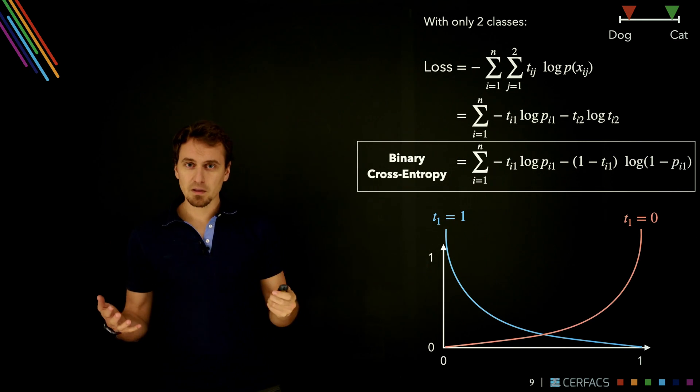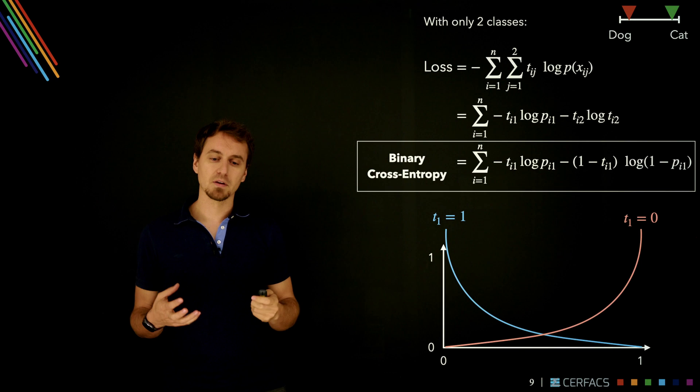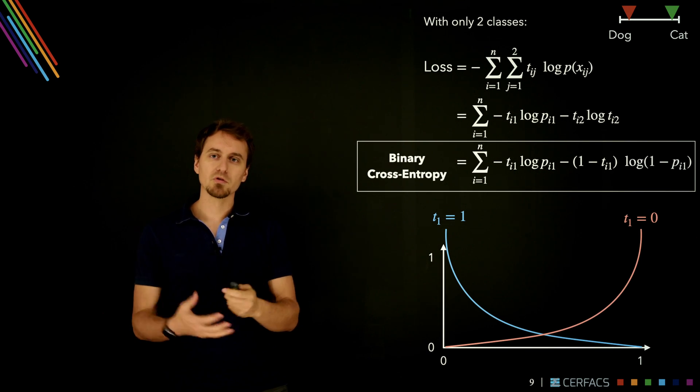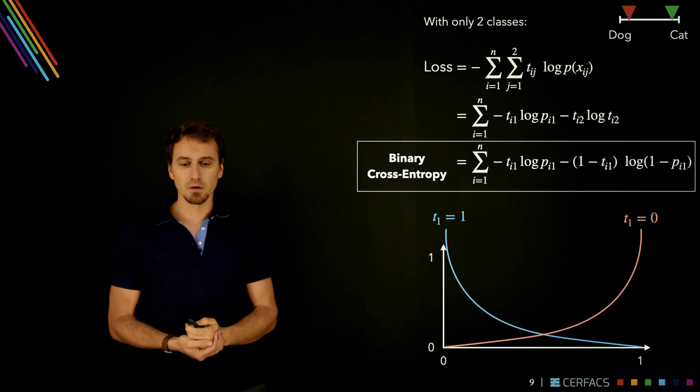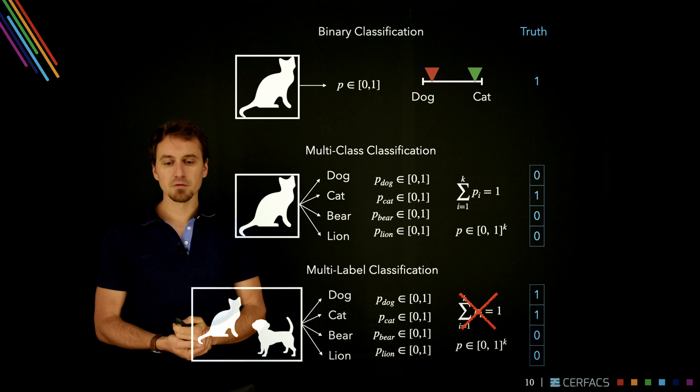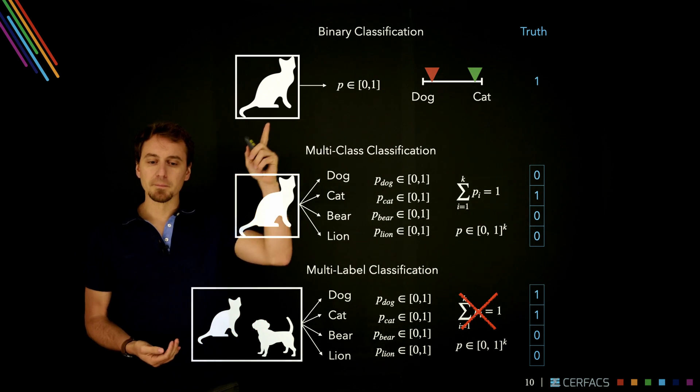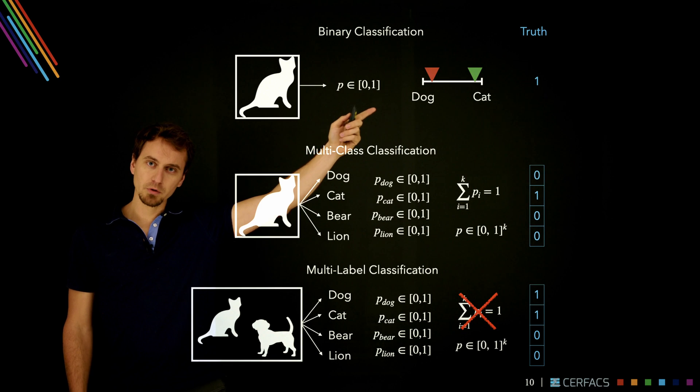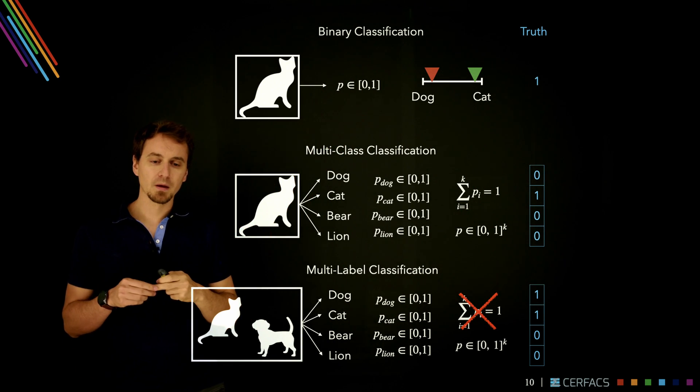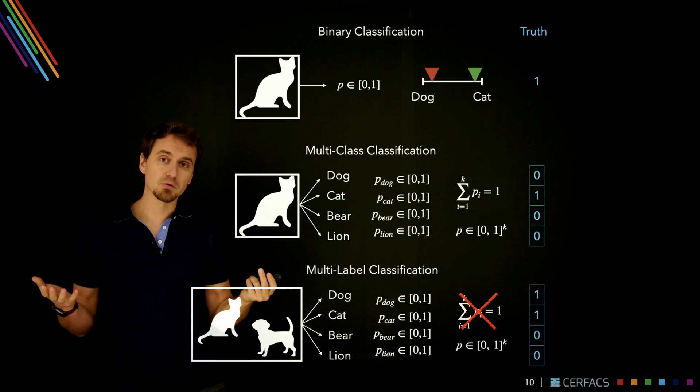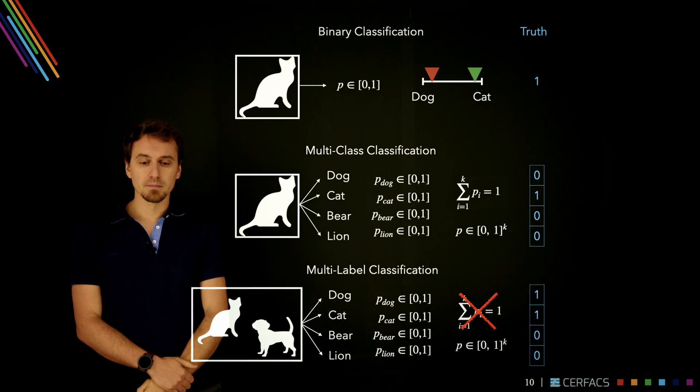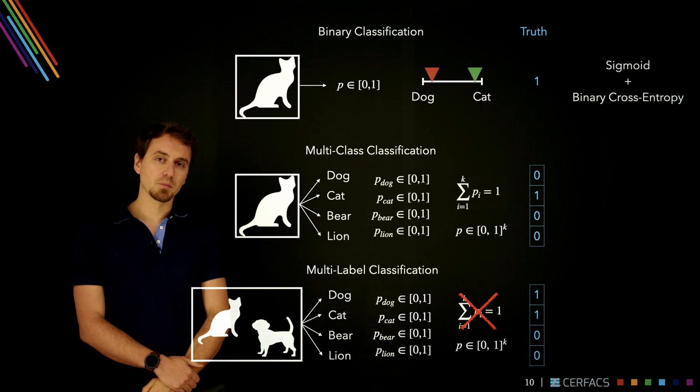Let's put all this together to figure out how we can treat these classification problems, what we should put in front each time we want to solve one. Starting back from binary classification that we saw at the beginning, we want a 0 to 1 output. So for that we need a sigmoid function, and we can use the binary loss function, the binary cross-entropy. So sigmoid plus binary cross-entropy is a great way to go.